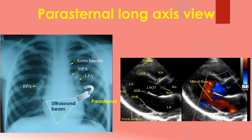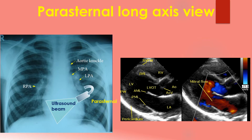The first view to be obtained is often the parasternal long axis view, which images the heart from the base to apex. The transducer is placed in the left parasternal region and fine adjustments in angulation are made until a similar view is obtained. Usual structures imaged in this view are the right ventricular free wall and outflow region, interventricular septum, aorta and aortic valve, left ventricular outflow tract, anterior and posterior mitral leaflets, left ventricular cavity, posterior wall of the left ventricle, and left atrium. Colour Doppler imaging is used to image the flow directions and any abnormal flows.